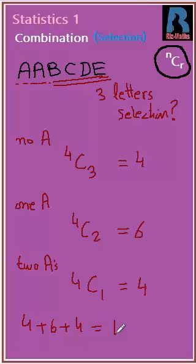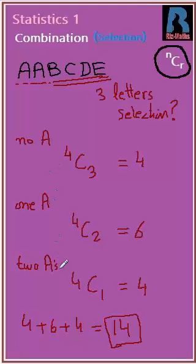Overall, we will have 4 plus 6 plus 4, which equals 14. So 14 selections are possible, where there might be no A, one A, or two A's. This is how we handle three-letter selections when some of the items are identical.